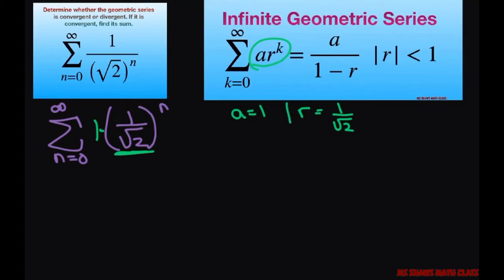If you take the absolute value of r, that's going to give you 1 divided by square root of 2, which is less than 1. That means it does converge and it converges to a divided by 1 minus r.